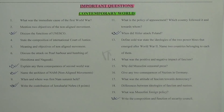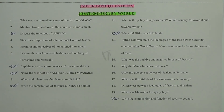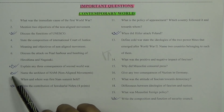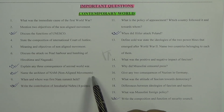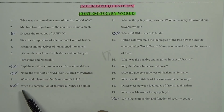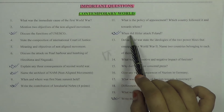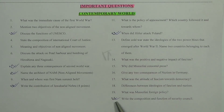Now let's talk about important questions of Contemporary World. I have listed 20 important questions. Key ones include: Question 3 — discuss the functions of UNESCO; Question 7 — explain three consequences of the Second World War; Question 8 — name the architects of the Non-Aligned Movement (NAM); Question 10 — write the contribution of Jawaharlal Nehru, listing four points; Question 12 — when did Hitler attack Poland; and Question 20 — write the composition and functions of the Security Council.